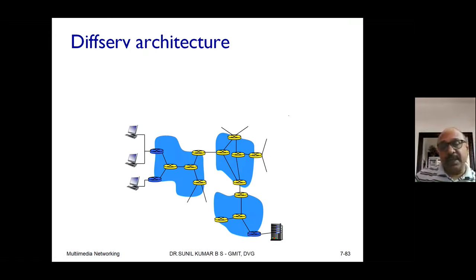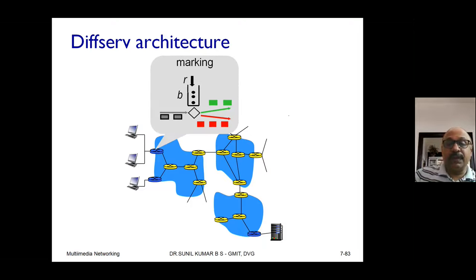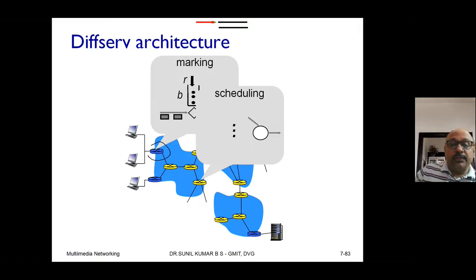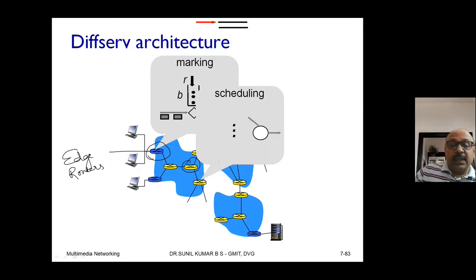Let us look at the architecture of this network. You can distinguish two types of network devices. One type is called edge routers, and the other type — shown in yellow — are called core routers.